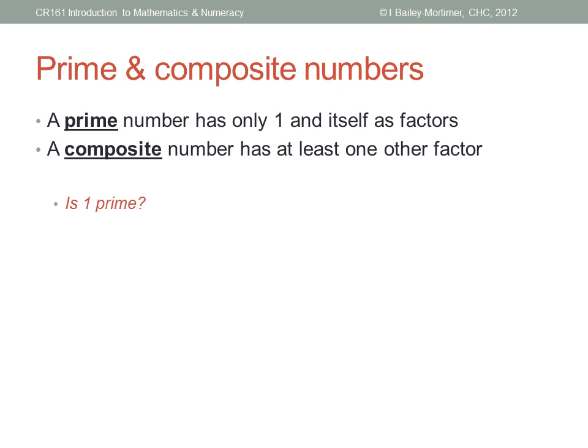So is one itself a prime number? People disagree on this. It depends very much on how you define prime. Does a prime number have exactly two factors? Then one is not prime. But if a prime number is divisible by one and itself, well, then by that definition, one is prime. You'll have to make up your own mind on this.